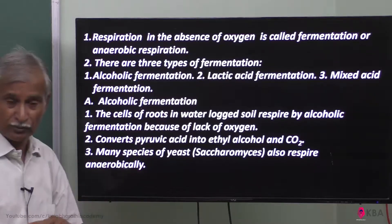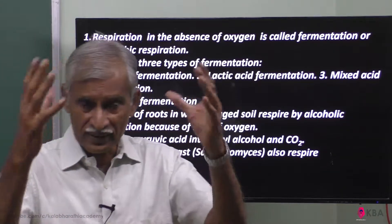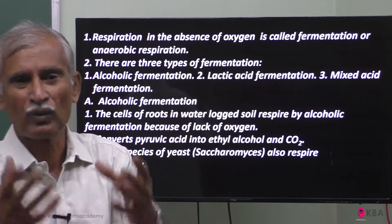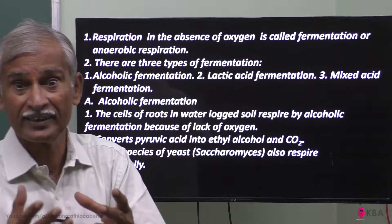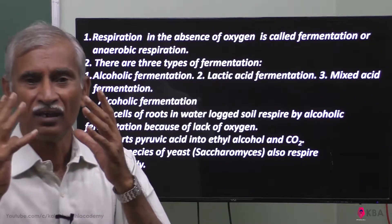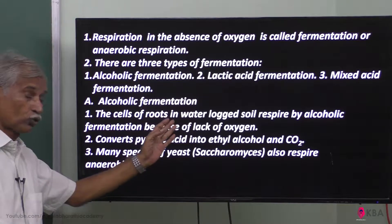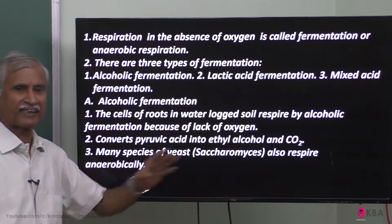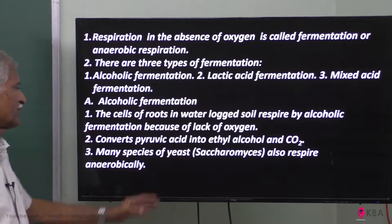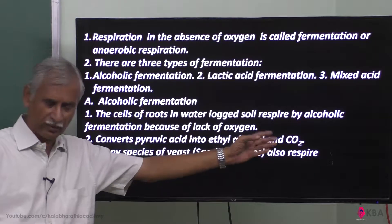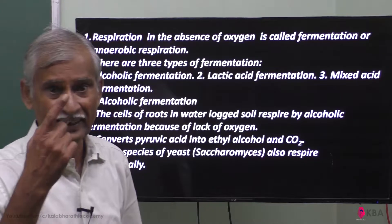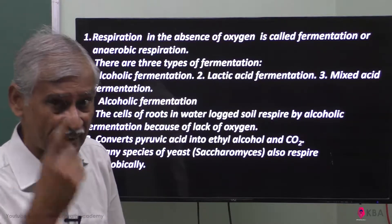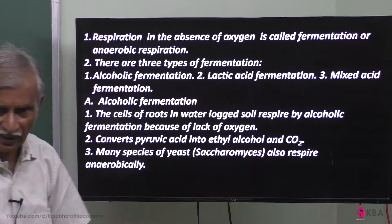In alcoholic fermentation, in water-logged areas, cells cannot get oxygen. The cells of roots in water-logged soil use this alcoholic fermentation method because there is a lack of oxygen. It converts pyruvic acid — formed through glycolysis — into ethyl alcohol and carbon dioxide, with another enzyme acting on the pyruvic acid.